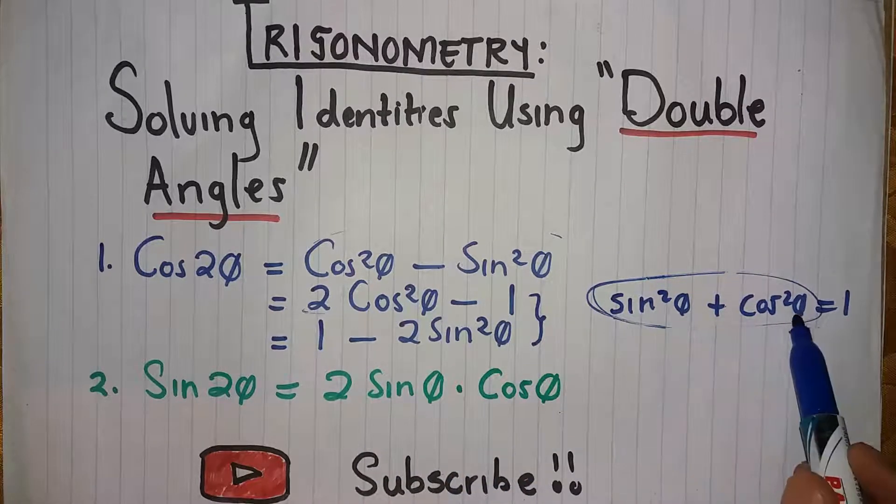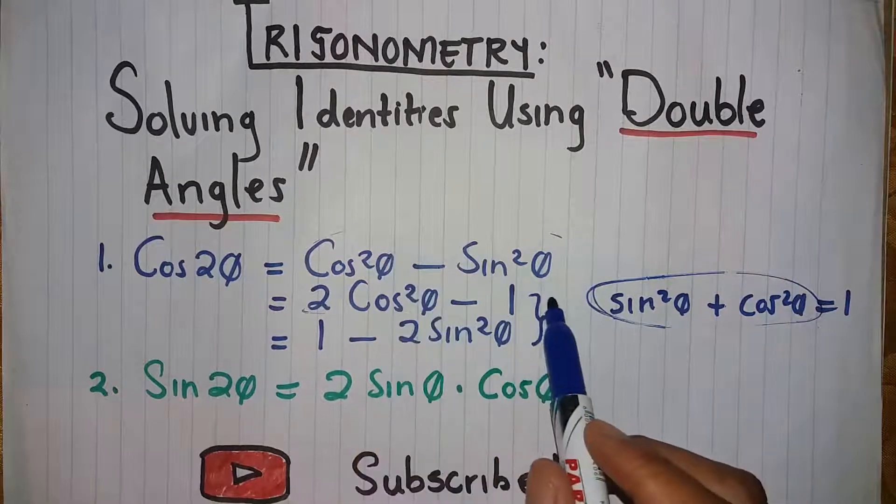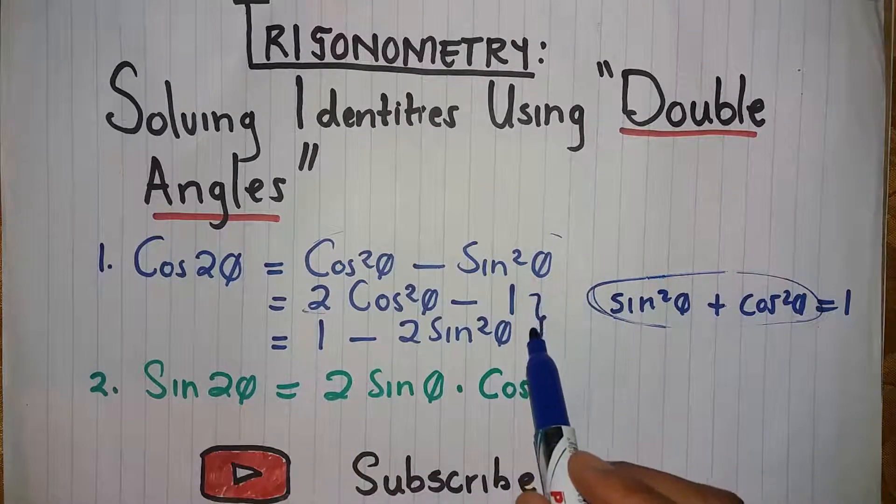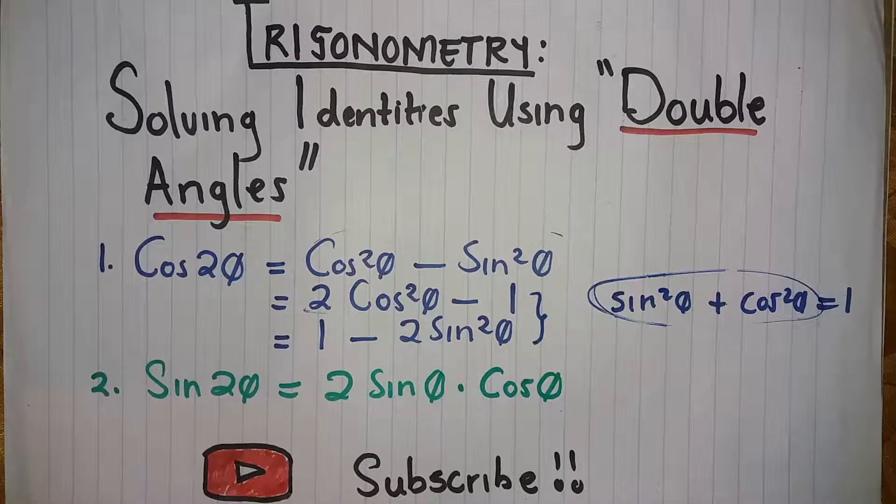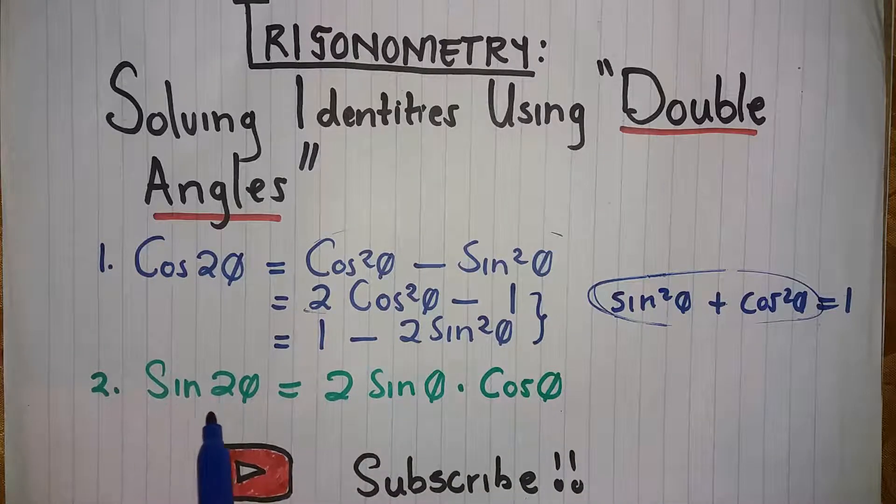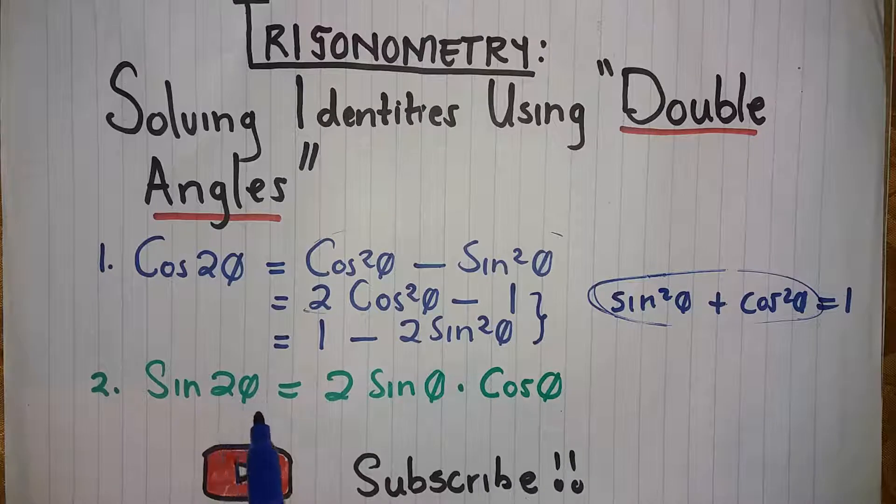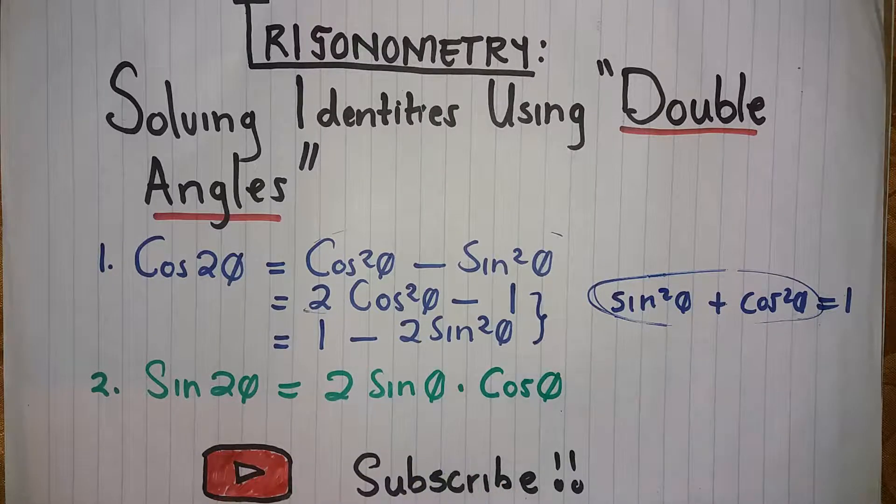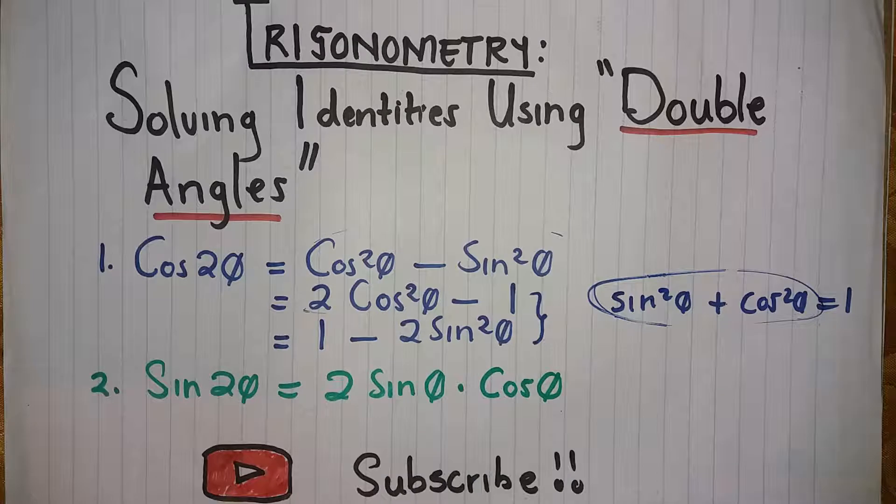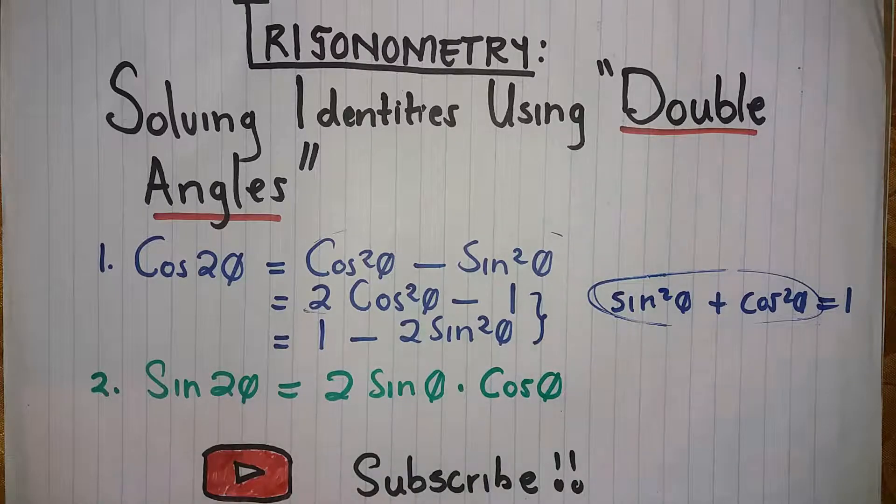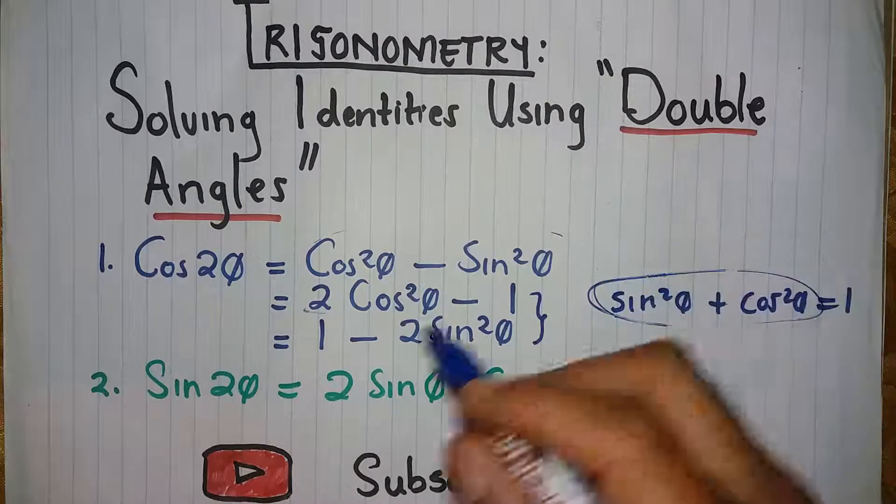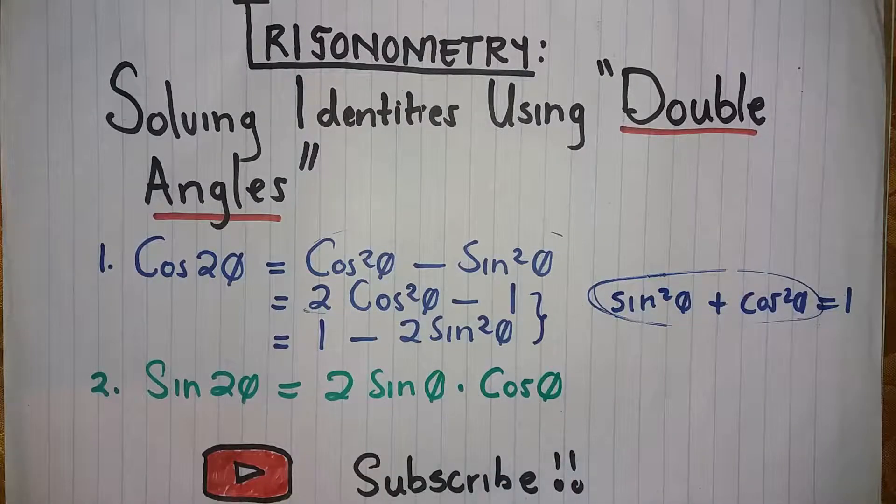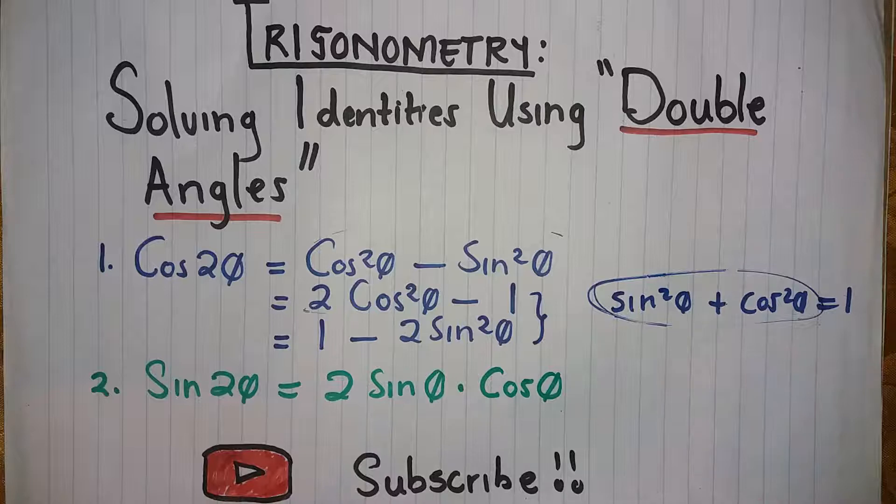So you have to see which identity to substitute for cos 2 theta. This is the second one: sine 2 theta equals 2 sine theta times cos theta. We have to use the double angle identities to solve or prove our identity.